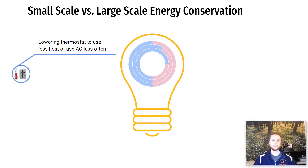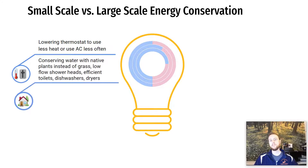One simple way to conserve energy is to turn down the heat in your home. Even better, you can get a programmable thermostat, which will enable you to set predetermined temperatures, allowing you to use less energy overall. Another option is using native vegetation or native plants around your home, which can decrease the amount of water you use — because water is energy. It takes electricity to purify water and to pump it out to your home.